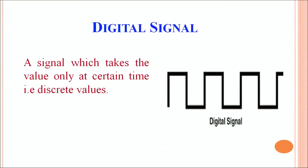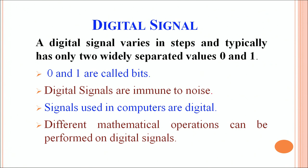A digital signal is a signal which takes only discrete values at a certain instant of time — for example, 0 and 1, or a minimum and a maximum, usually kept at 5 volts. So 0 volt corresponds to 0 bit and 5 volts corresponds to 1 bit. A digital signal varies in steps and has two widely separated values, 0 and 1, called bits. Digital signals are used in computers primarily because they are immune to noise.